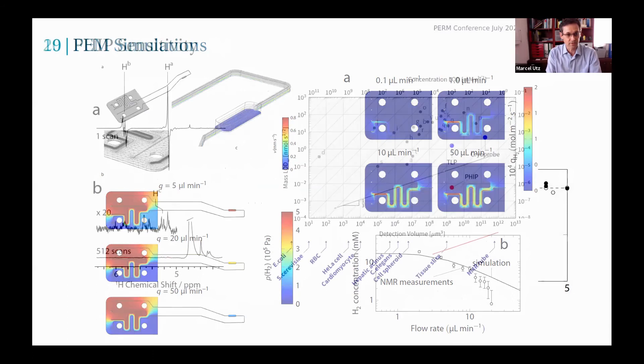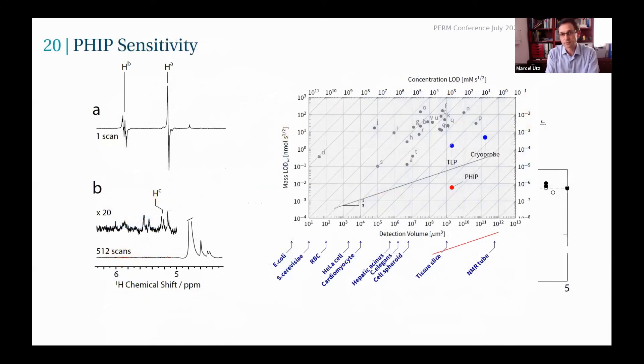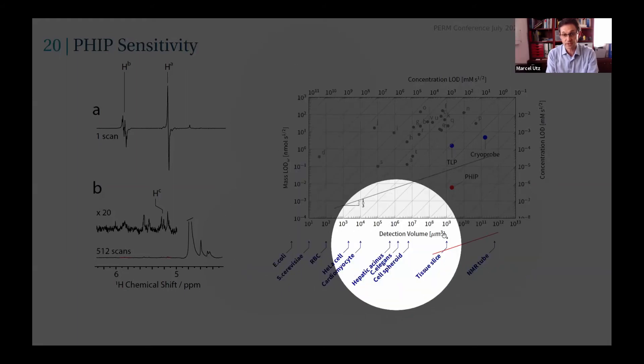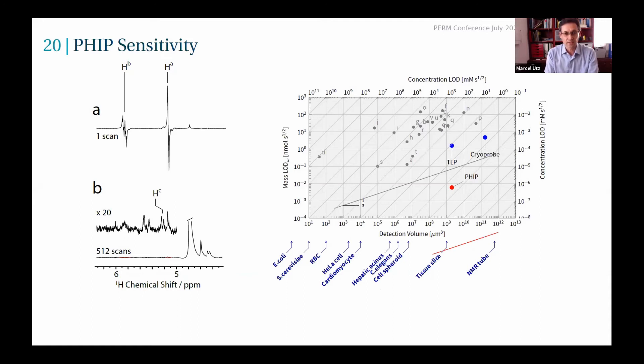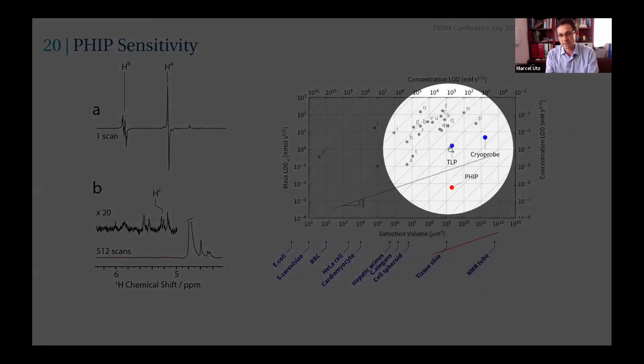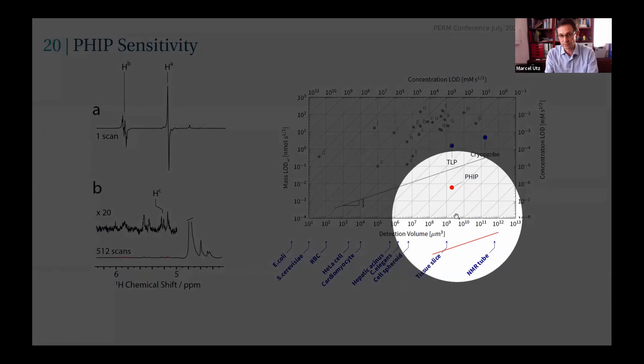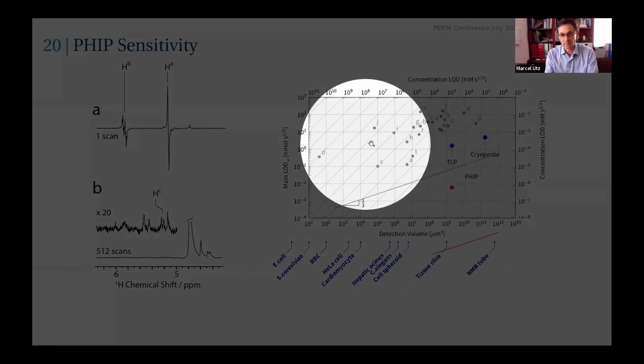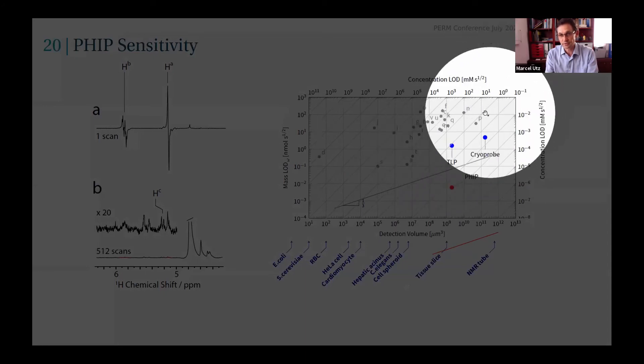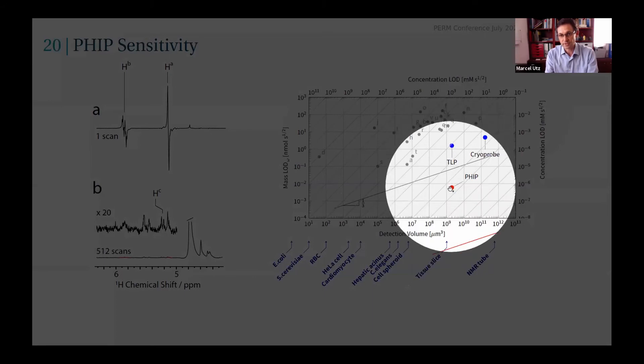I'll skip over the finite element simulations here, and I'd just like to show you the improvement in sensitivity that we get. This is a plot which shows the sensitivity, the mass limit of detection, of various NMR detectors as a function of their size in terms of the volume that's being looked at. You see here, this is the thermal polarization result with our transmission line probe which I showed you earlier, which is about this volume—that corresponds to two and a half microliters. We can see concentrations which are about millimolar, which are on this diagonal here in this diagram. Now if you hyperpolarize the sample, your sensitivity of course improves by a few orders of magnitude—maximum five—and you end up down here.